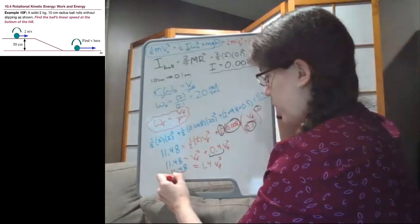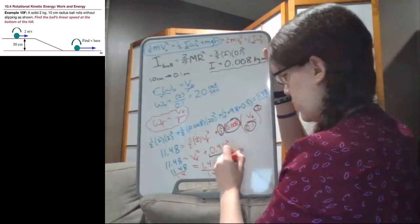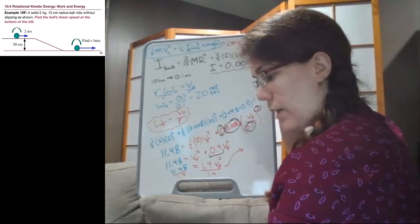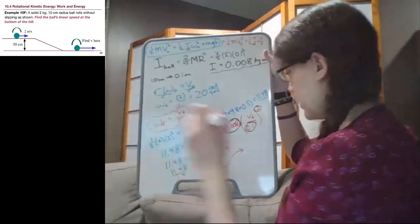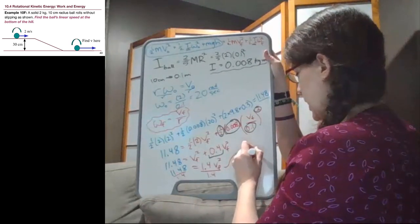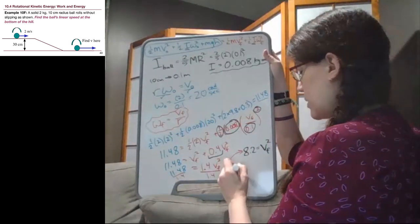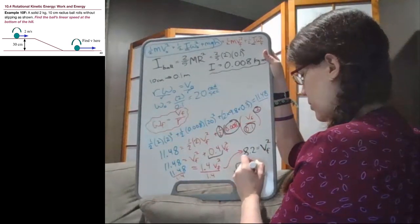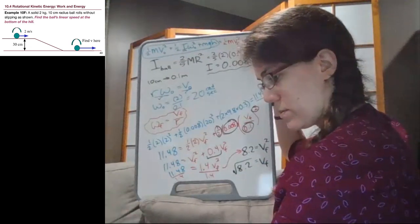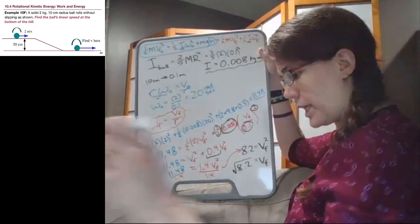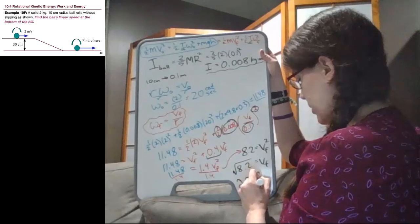We can divide both sides by 1.4. So 11.48 divided by 1.4 equals 8.2, and that 8.2 equals the speed we're looking for squared. We'll take the square root of 8.2 to get our final velocity, and we're going to get 2.86 meters per second.